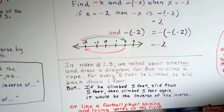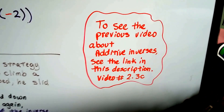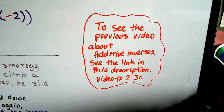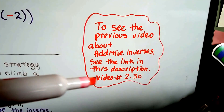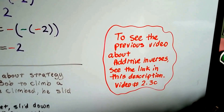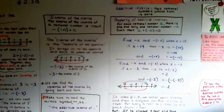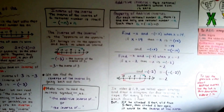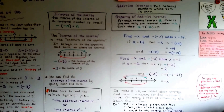I know this is really confusing to some people, and that's okay. To see the previous video about additive inverses, you can go into the description of this video and find the link for 2.3c, because we're in 2.3d. That might help put some understanding on this video. So that's the inverse of an inverse. We're going to continue on to unit 2.4a and talk about subtracting rational numbers — subtracting negative and positive numbers.